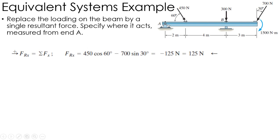So I have 450 cosine 60 in the X direction, and I also have negative 700, that would be sine of 30. Again, that's in the negative X direction. That leaves me with negative 125 or 125 newtons going to the left, adding up these two forces. The 300 is all in the Y direction. So that's the X component of the resultant force.